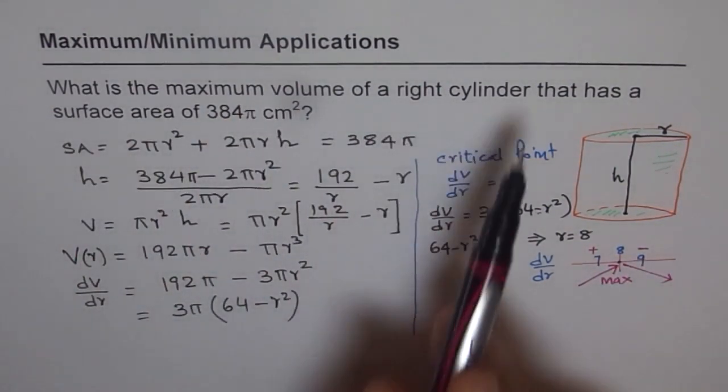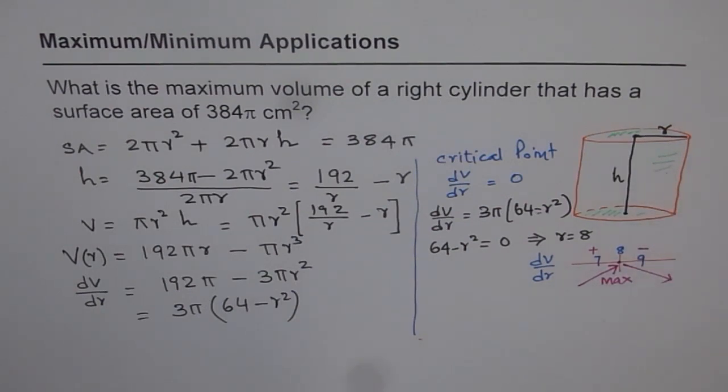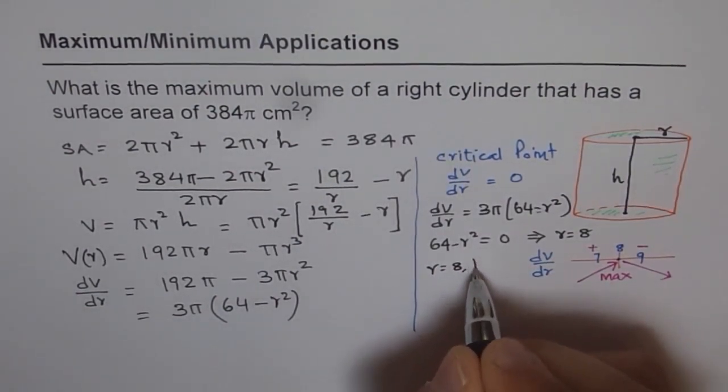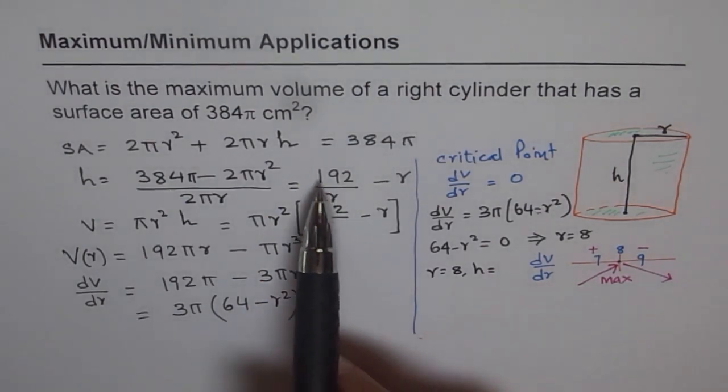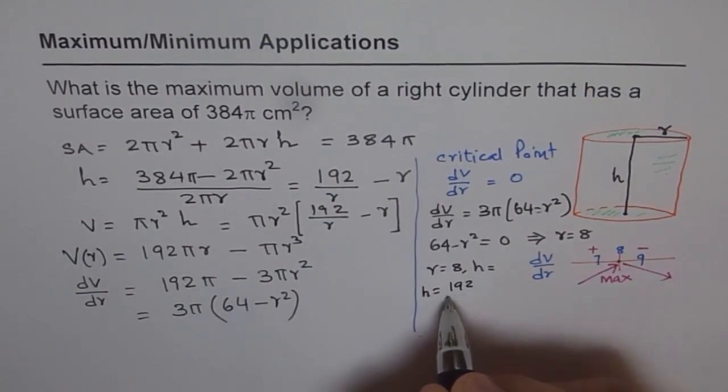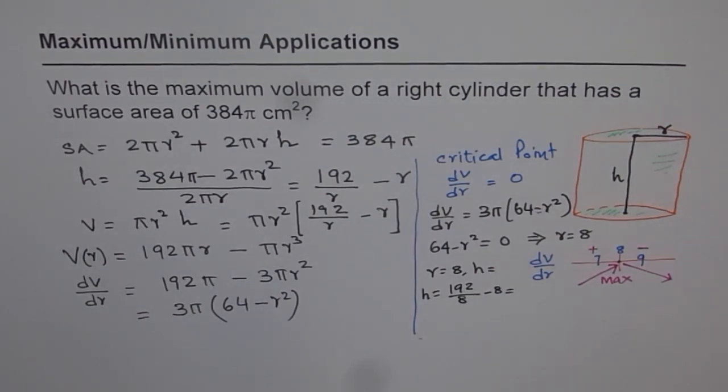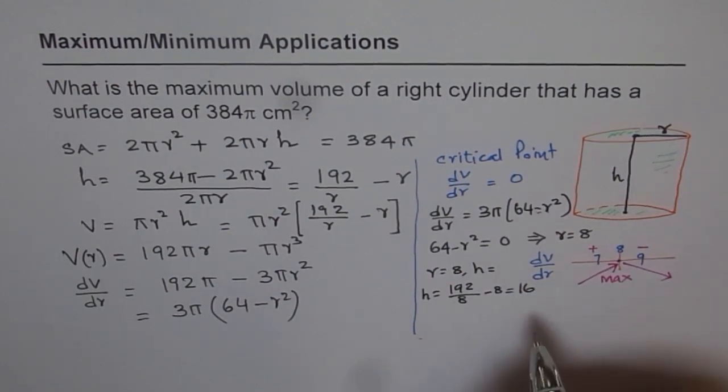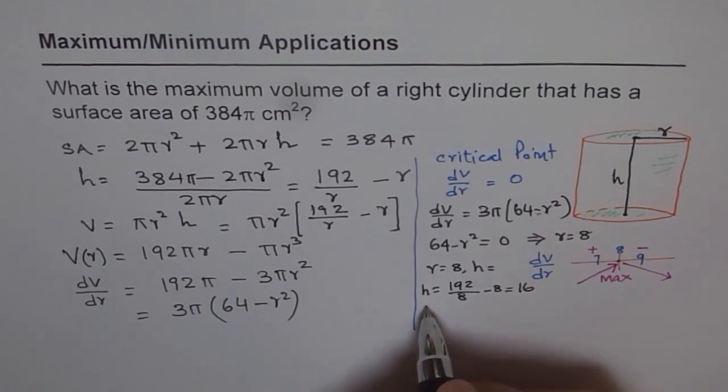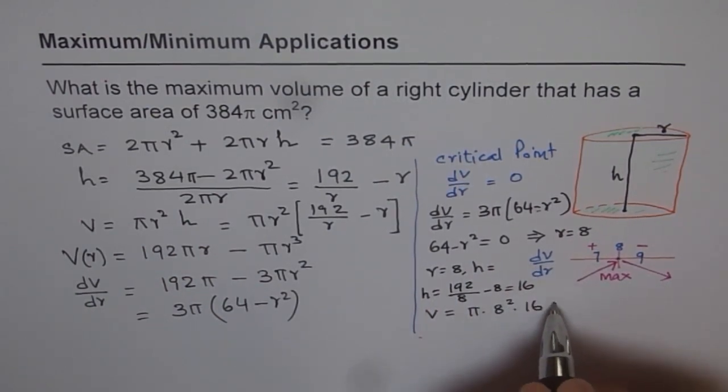So what is the maximum volume of the cylinder? For maximum volume we have radius = 8, and height is how much? To find height we have this relation 192/r - r. So height = 192/8 - 8. Using calculator, 192 divided by 8 equals 24 minus 8, so we have 16. Height is 16. Now the volume will be π times r² times h. r is 8, so 8² times height which is 16.